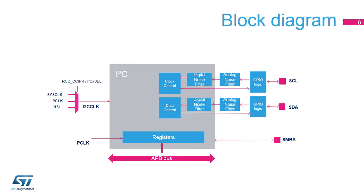Here is the I2C block diagram. The registers are accessed through the APB bus, and the peripheral is clocked with the I2C clock, which is independent from the APB clock. The I2C clock can be selected from among the system clock, APB clock, and the high-speed internal 16 MHz RC oscillator.